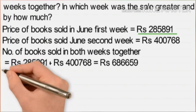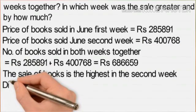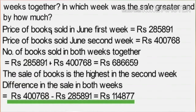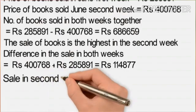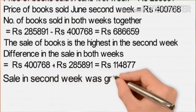Price of books sold in the first week equals 2,85,891. Price of books sold in the second week equals 4,00,768. They asked in which week the sale was greater and by how much. Obviously it is the second week. The difference in sale equals rupees 4,00,768 minus rupees 2,85,891, which equals rupees 1,14,877. The sale in the second week was greater by rupees 1,14,877.